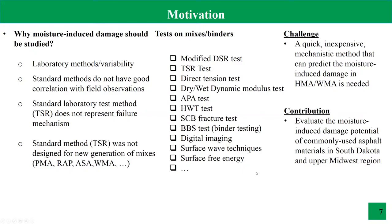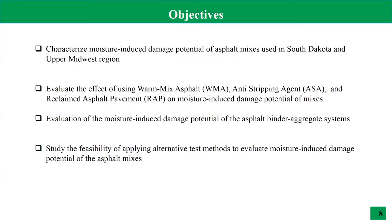In this study, the mixes, asphalt binders, and aggregates evaluated were collected from South Dakota, which are also available in the upper Midwest region. The objectives were to characterize the moisture-induced damage potential of asphalt mixes in South Dakota, evaluate the effect of different additives such as warm mix asphalt, anti-stripping agents, and reclaimed asphalt pavement on moisture-induced damage potential, and evaluate the moisture-induced damage potential of asphalt binder and aggregate systems using the BBS — or Binder Bond Strength — tester.